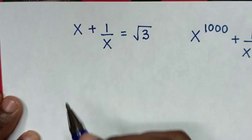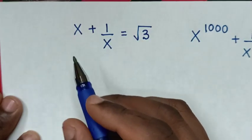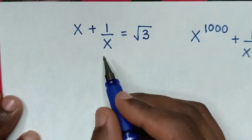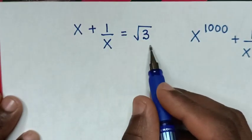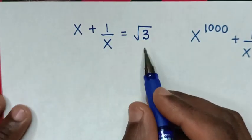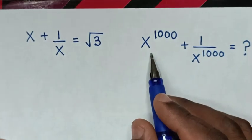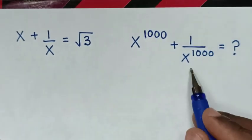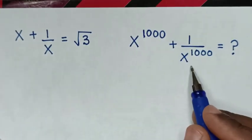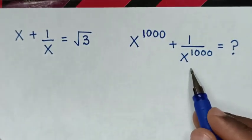Hello. How to solve x plus 1 over x is equal to square root of 3, to find the value of x to the power of 1000 plus 1 over x to the power of 1000.